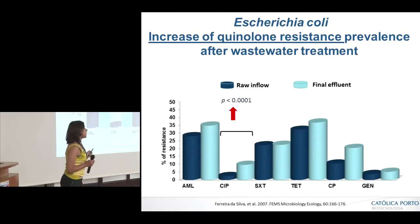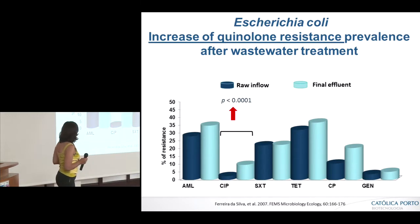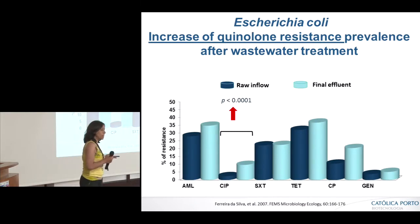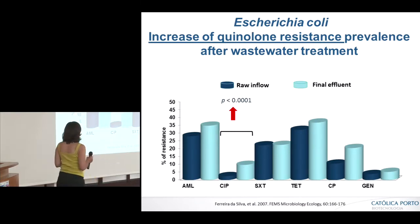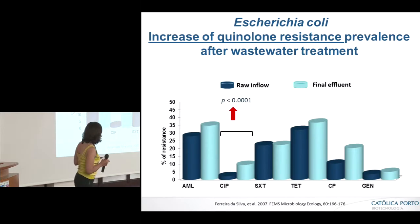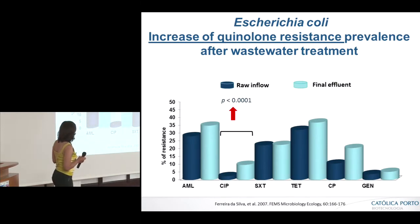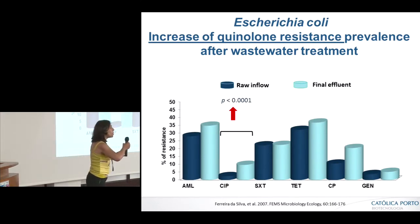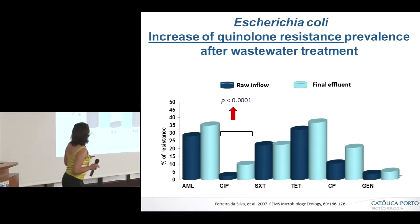Something else that is not good sometimes happens: some types of antibiotic resistance can actually increase during the wastewater treatment process. When I say increase, I mean the proportion of resistant bacteria is selected and grows during this process. This is a real problem because instead of cleaning, we may be promoting resistance to spread.